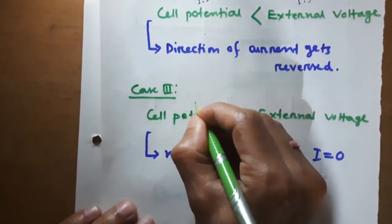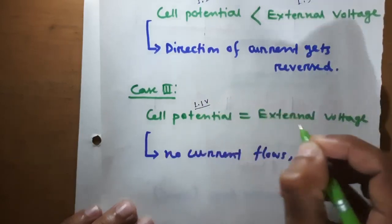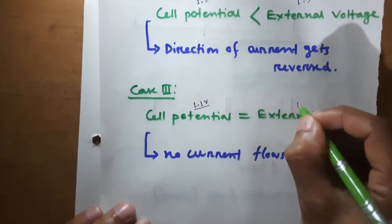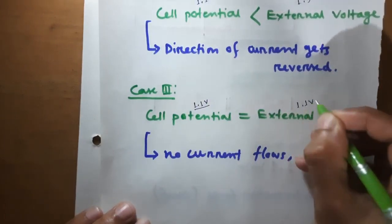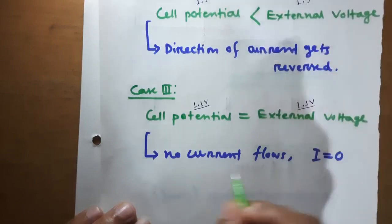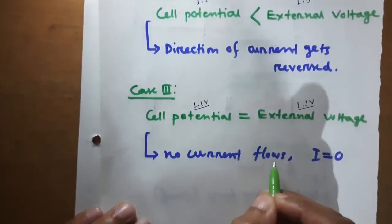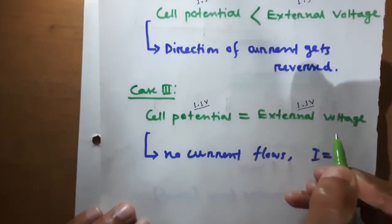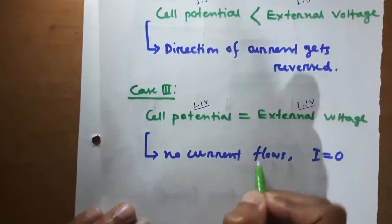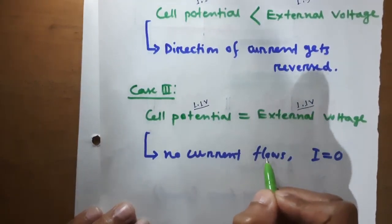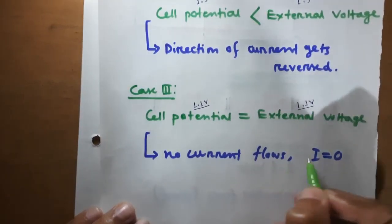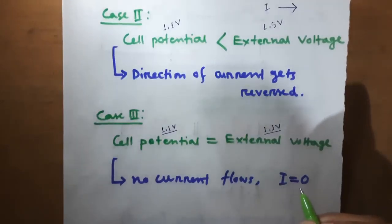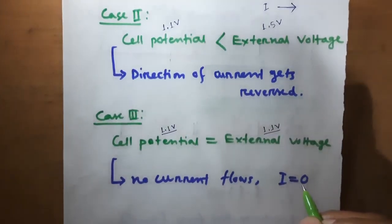Case 3: when cell potential becomes equal to the external potential. If we connect an external potential source of exactly 1.1 volts to the Daniel cell, then no current flows — that means current I equals zero. So this is all about the electrochemical cell.